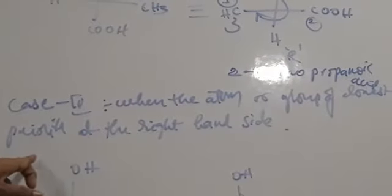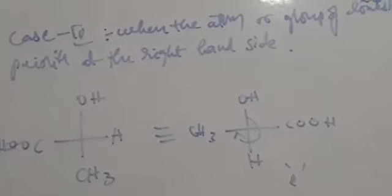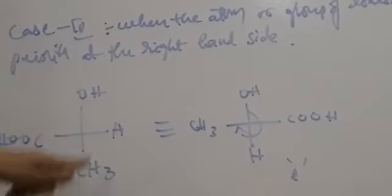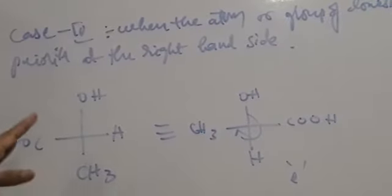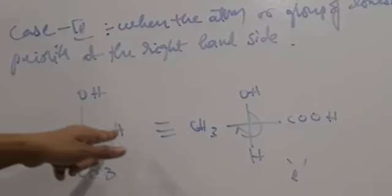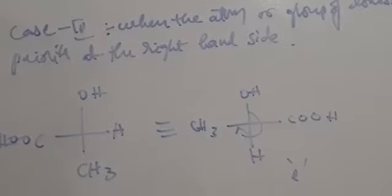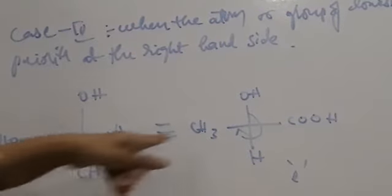Next, in case 4, if the atom or group with least priority is present on the right hand side — here hydrogen is the least priority atom and it is present on the right hand side — so in this case, without changing the position of the top group, we have to rotate the molecule in clockwise direction. So clockwise direction rotation takes place here, and in clockwise direction we get this.